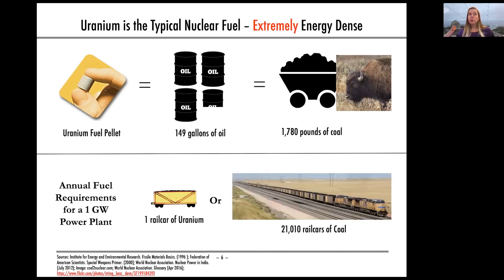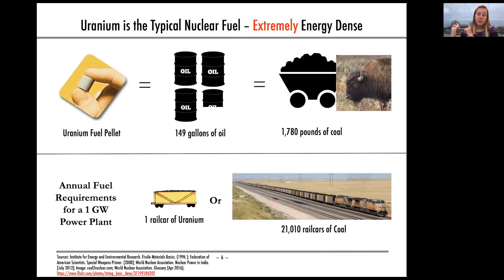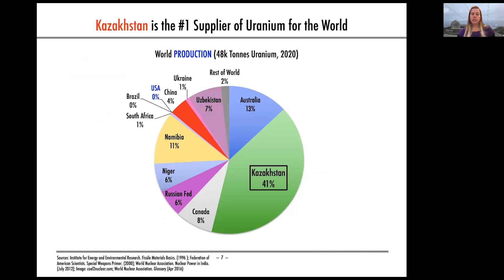In terms of fuel requirements, nuclear power plants are often large. Diablo Canyon, which is behind me, has two nuclear reactors each at a gigawatt. To power one gigawatt reactor for a year, you would need just one single rail car of uranium. If it were a coal-fired power plant, you'd need 21,000 rail cars of coal. Extremely energy dense.